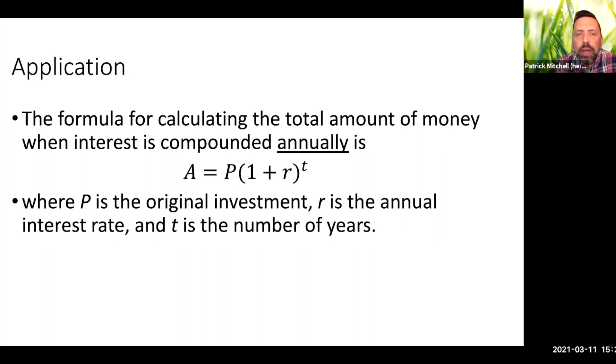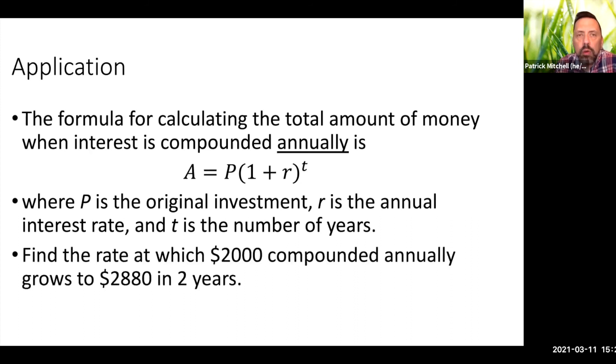The formula for calculating the total amount of money when interest is compounded annually is A equals P times (1 plus R) to the power T where P is the original investment, R is the annual interest rate and T is the number of years. So in this problem, we're going to find the rate at which $2,000 compounded annually grows to $2,880 in 2 years. So take a few seconds and think about how to translate that question into, using this formula, what is given and what do we have to find? So when I switch over to the tablet, you'll see that I've already done that. So pause the video, try to figure that out. Come back when you're ready.